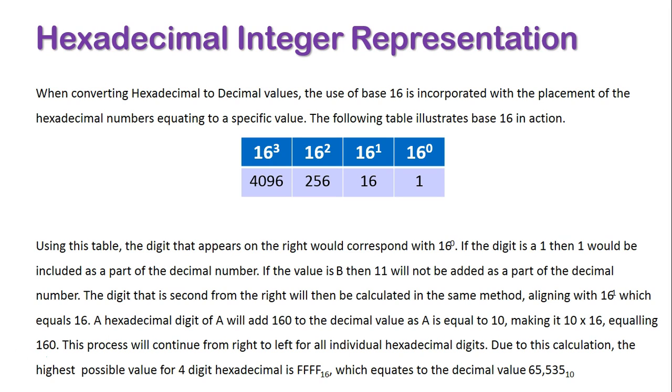This process will continue from right to left for all individual hexadecimal digits. Due to this calculation, the highest possible value for 4-digit hexadecimal is FFFF base 16, which equals the decimal value of 65,535.